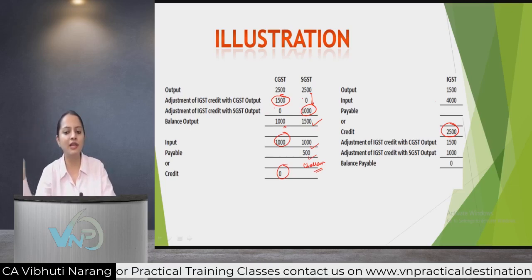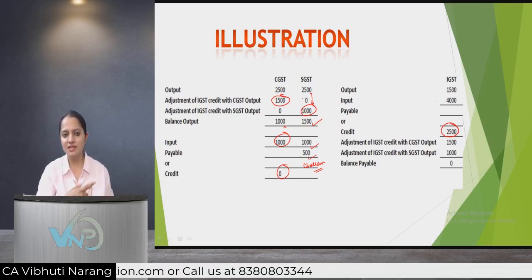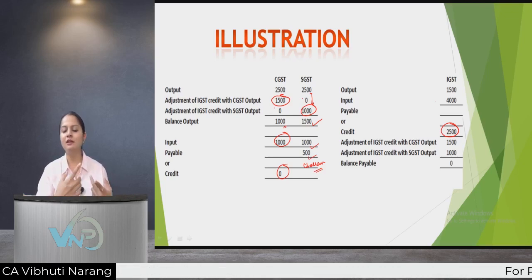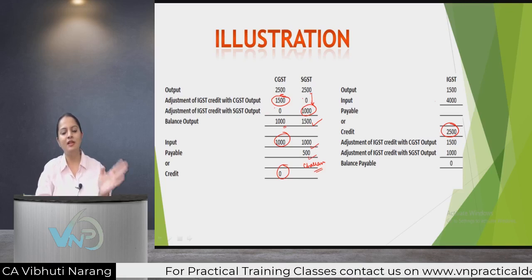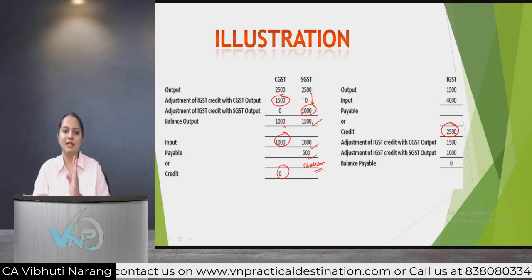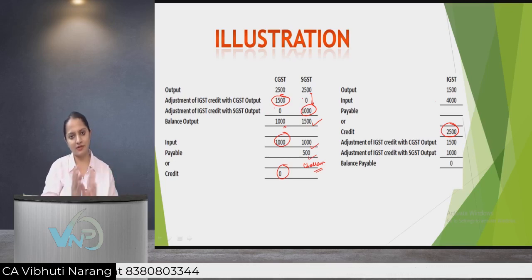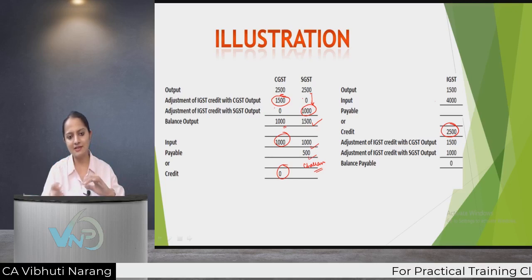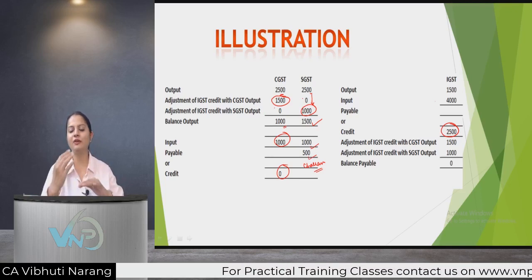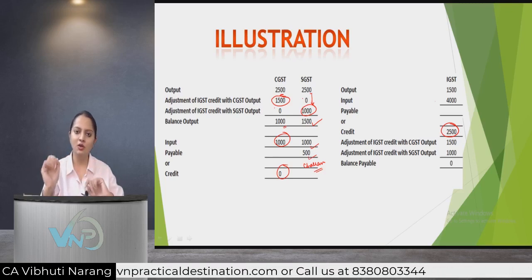To quickly revise: Adjustment one — all three heads payable, no adjustment needed. Adjustment two — CGST and SGST credits or payables cannot be set off against each other. Adjustment three — if IGST is payable, first utilize CGST credit, then SGST credit if any balance remains. Adjustment four — if IGST credit exists, it can be utilized against CGST and SGST output in any order you prefer.